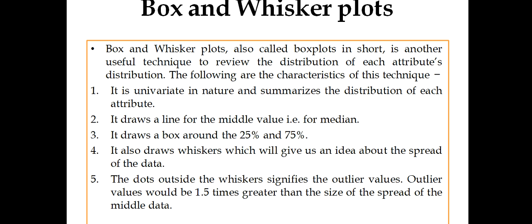The characteristics of this box and whisker plots are very important. You may note down these points. It is univariate in nature and summarizes the distribution of each attribute. Univariate in nature means I am considering one attribute at a time. It draws a line for the middle value, that is our median. You all know that the median is the middle value. Then it draws a box around 25% and 75%.